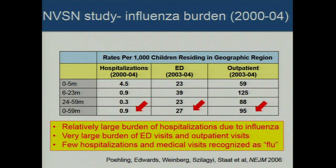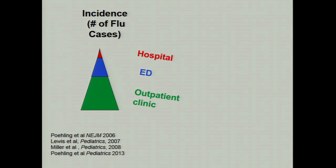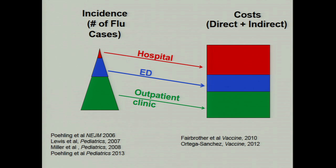About 1 in 1,000 children were hospitalized, 27 in 1,000 were seen in the ED, and 95 in 1,000 — almost 1 in 10 kids — were seen in a clinic for flu. There was a large burden of hospitalizations, very large burden of ED and clinic visits. Interestingly, back then only about 20% of these hospitalizations, ED visits, or clinic visits were actually recognized as being due to influenza — they were labeled bronchiolitis or other diagnoses. We've been doing these studies every couple years and also did cost studies showing that hospitalizations, ED visits, and outpatient visits all contribute substantially to direct medical and indirect costs.